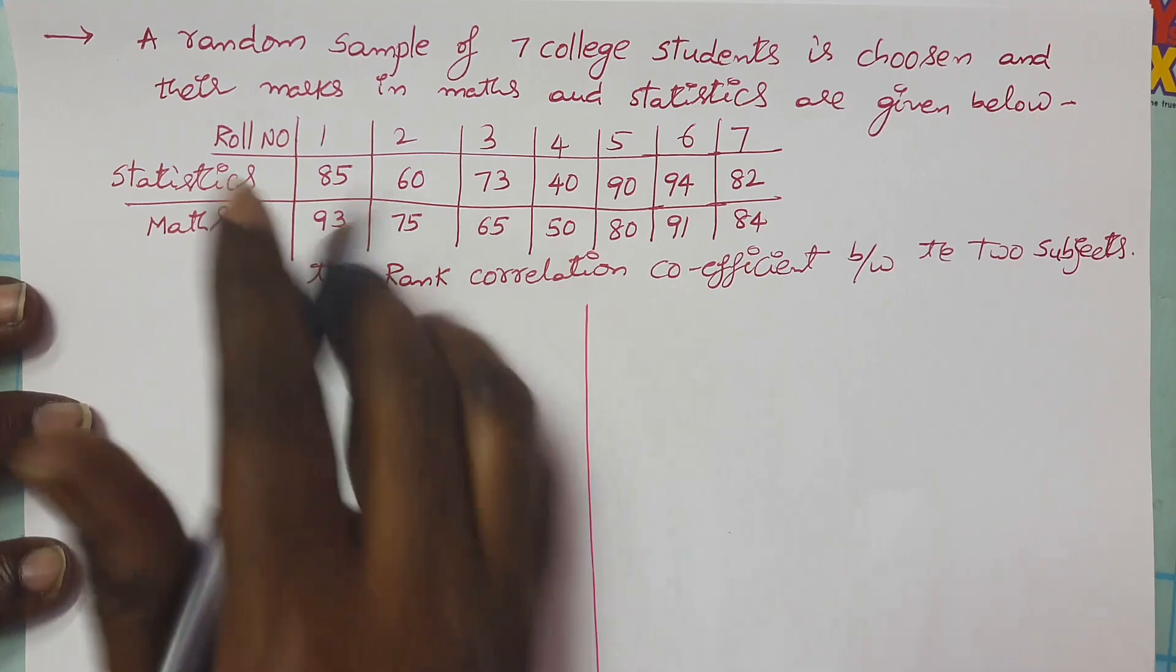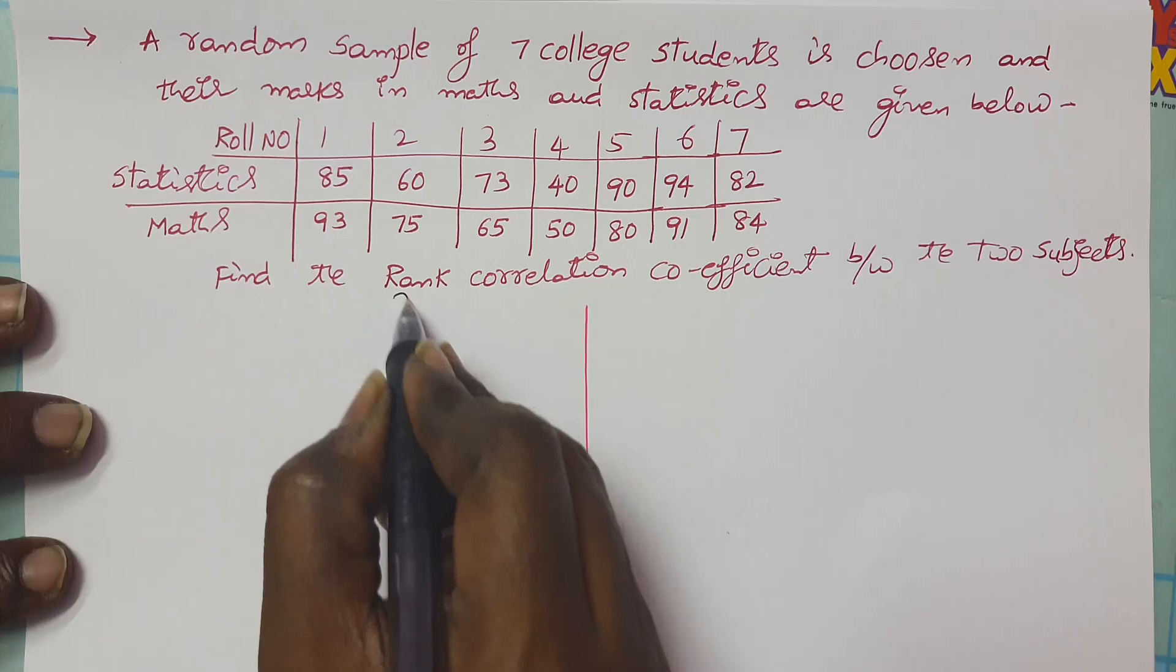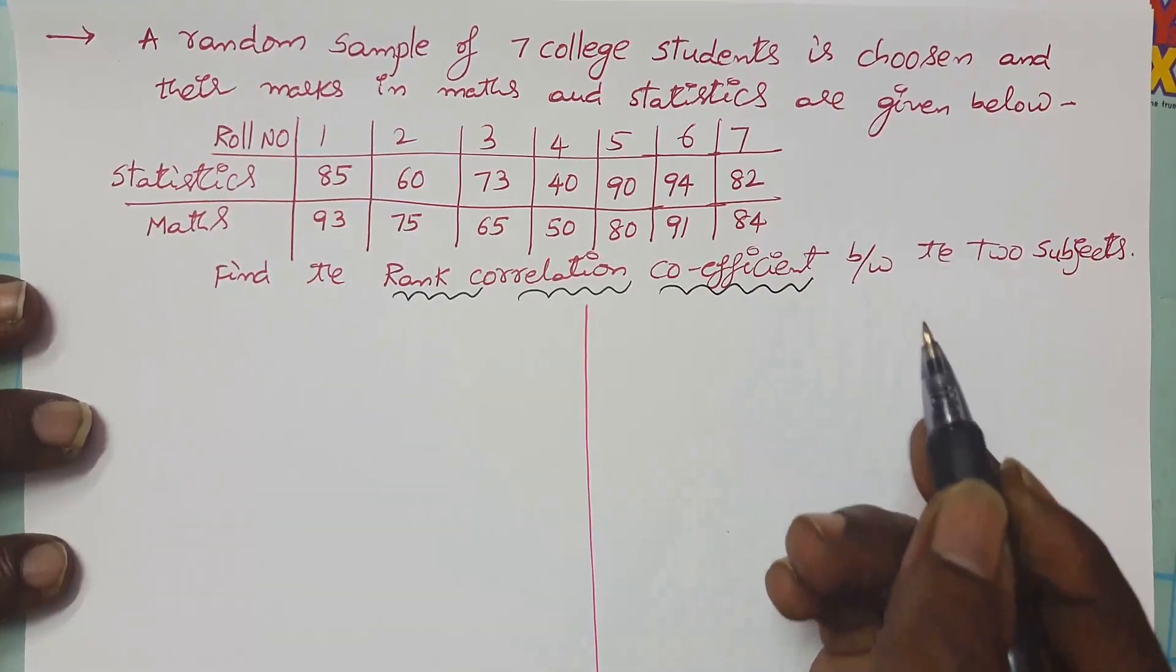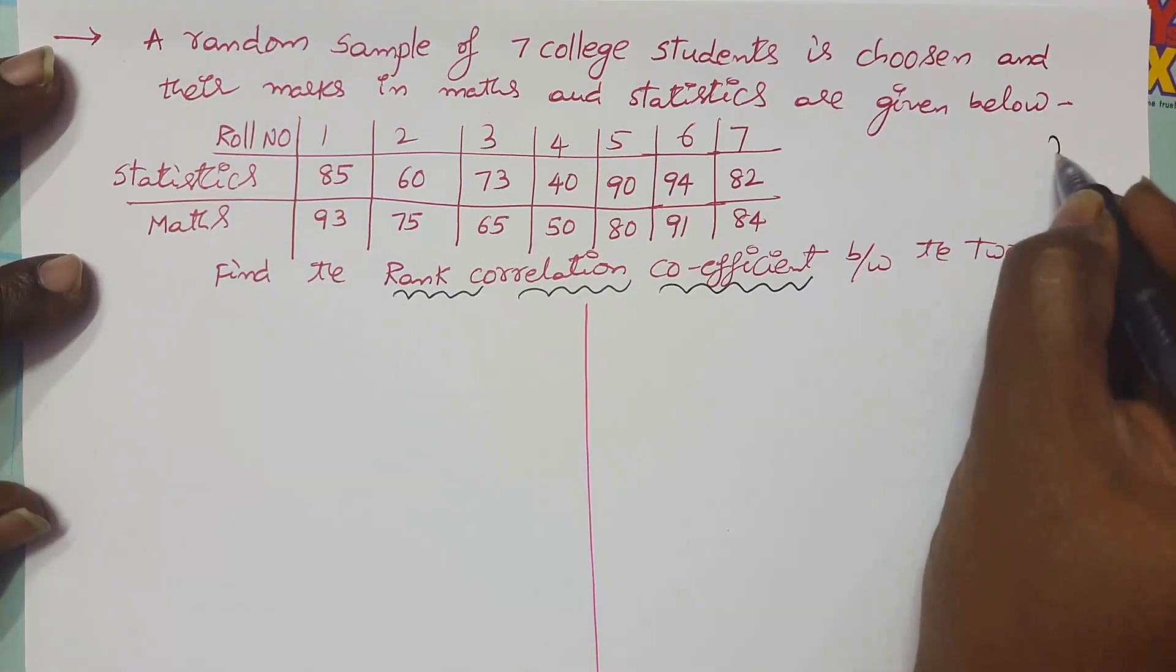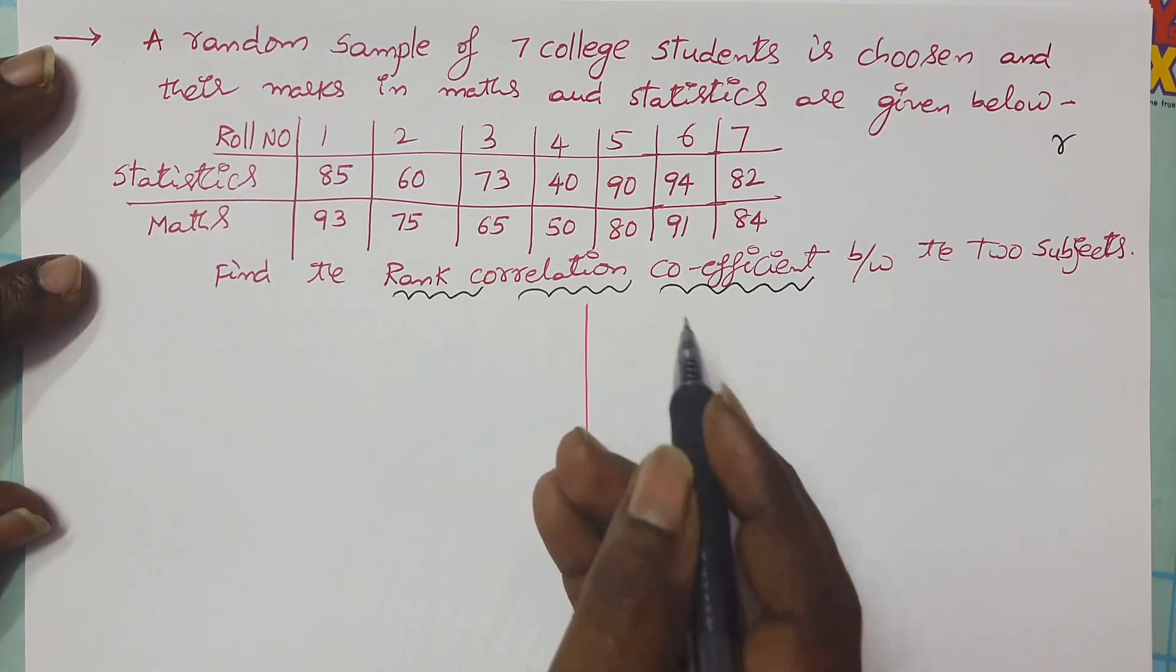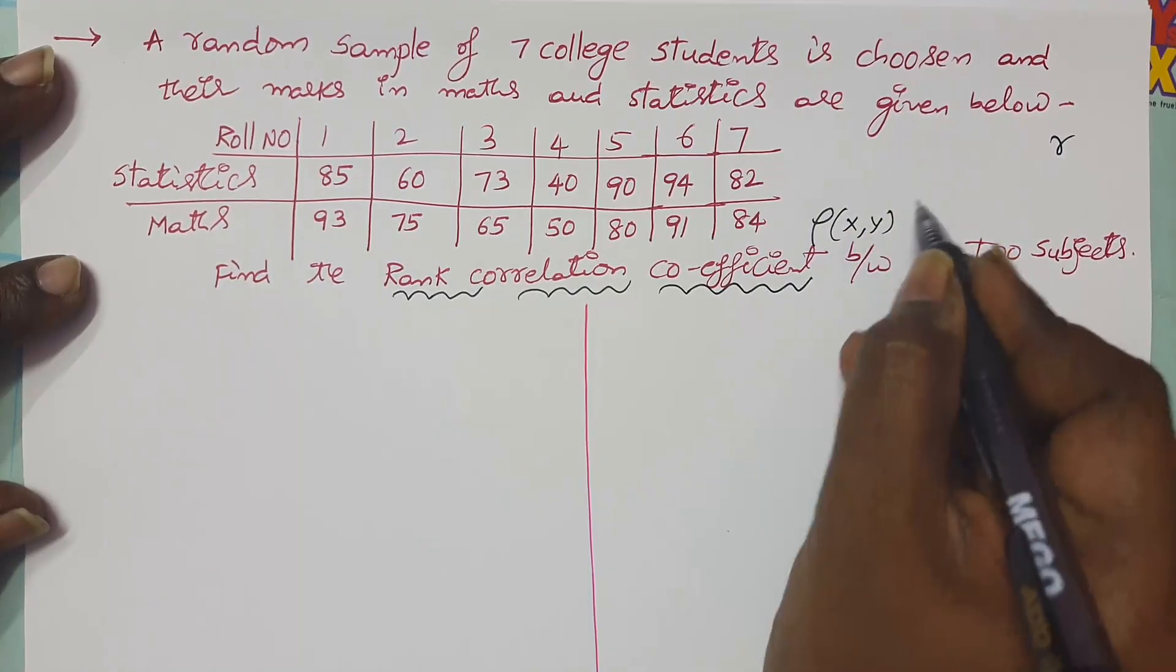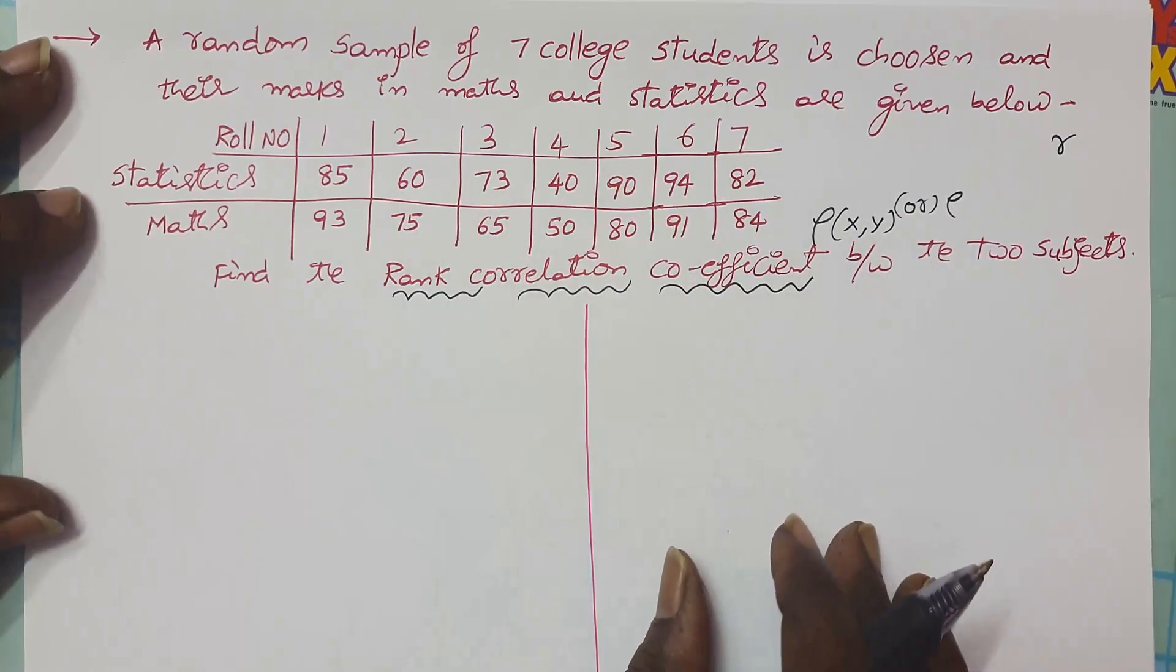Hi everyone, welcome back to our channel. In this video I will give an example on rank correlation coefficient, which is different to the correlation coefficient. Correlation coefficient is represented by small r, but rank correlation coefficient is represented by rho.